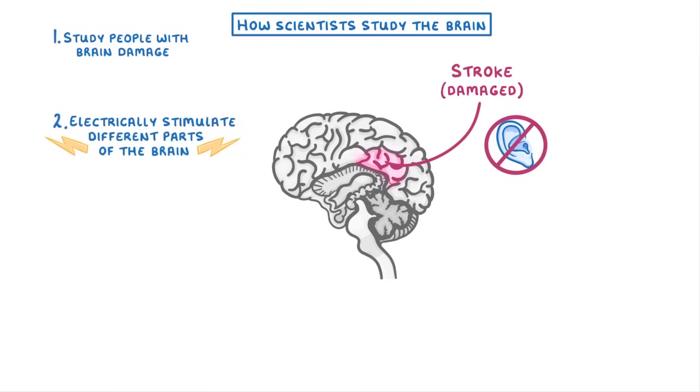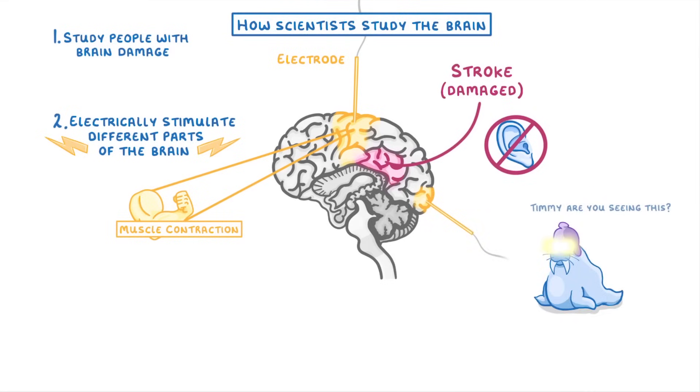Another technique is to electrically stimulate different parts of the brain using a tiny electrode and see if anything happens. For example, if we zap this part of the brain, it would result in muscle contraction, and the person might move an arm or a leg. Whereas if we stimulated this region, it might cause the person's vision to go funny, because this is the part of the brain involved with vision.